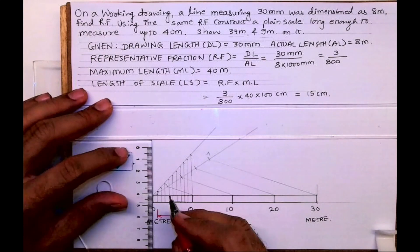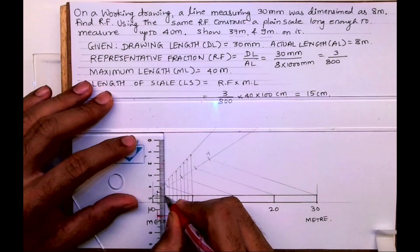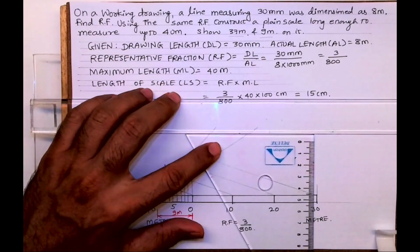Now if you see we have to mark 37 meters, so we will take 7 from here and we will take 30 from here.